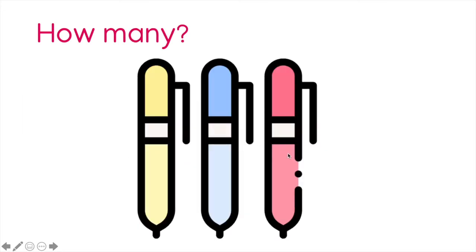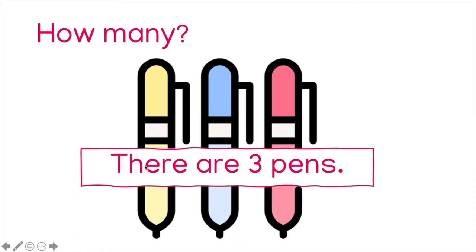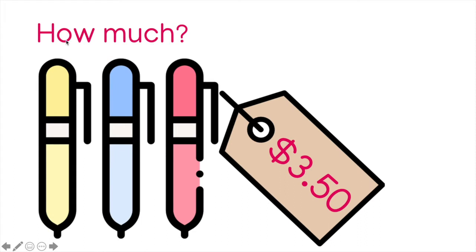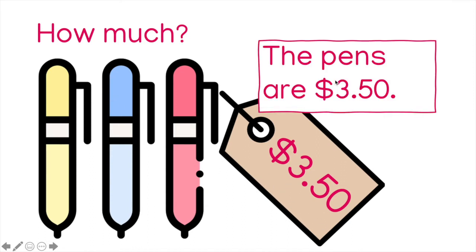Another example, we have three pens: a yellow pen, a blue pen, and a pink pen. How many pens are there? One, two, three pens. There are three pens. Three dollars and fifty cents — or you can say three fifty. The pens are three dollars and fifty cents.